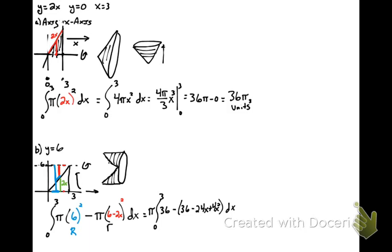I'll write it below it. This is equal to pi times the integral from 0 to 3 of 24x minus 4x squared. And when we integrate this, we'll end up with 12x squared minus 4 thirds x cubed from 0 to 3.